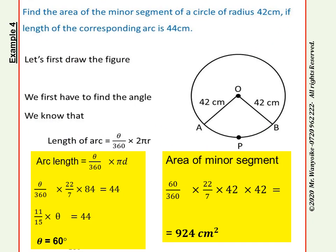Let's look at example 4. We have to find the area of the minor segment of a circle of radius 42 centimeters if the length of the corresponding arc is 44 centimeters. The distance from A through P to B is 44 centimeters. The first thing is to draw that circle as shown in this figure, and then you find the angle at O.